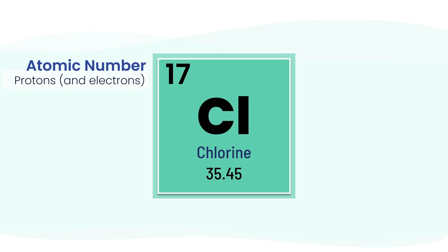Now, the number at the bottom, 35.45, is the atomic mass. It's the average mass of all the naturally occurring forms of chlorine, called isotopes. And because it's an average, it's almost always a decimal, not a whole number.